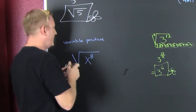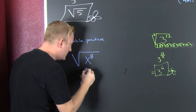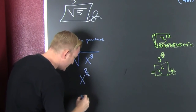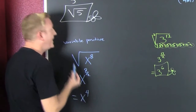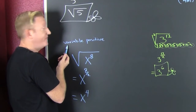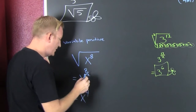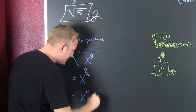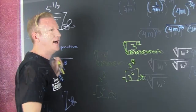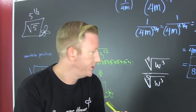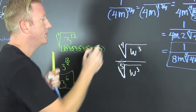Same trick here — this is x to the 8 over 2, which is x to the 4th. Now, if the directions didn't say to assume the variables are positive, that would be the absolute value of x to the fourth. But since it says the variables are positive, we just write x to the fourth.